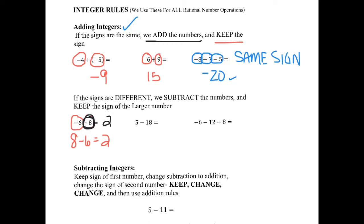My next example: positive 5, negative 18. The signs are different, so I'm going to subtract. 18 minus 5 is 13. However, the larger number is negative, so my answer is negative 13.